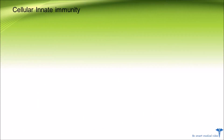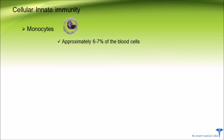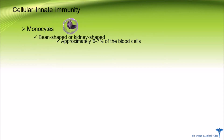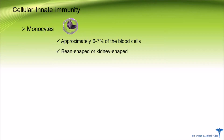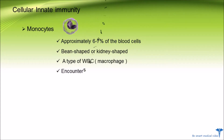We will start with cellular immunity, which is cell-mediated immunity. The cells involved in the cellular response — number one — are monocytes. The normal range of monocytes is approximately six to seven percent of blood cells. The nucleus is bean-shaped or kidney-shaped. Monocytes are a type of WBC and are circulating phagocytes that reach the site of infection and encounter foreign substances.